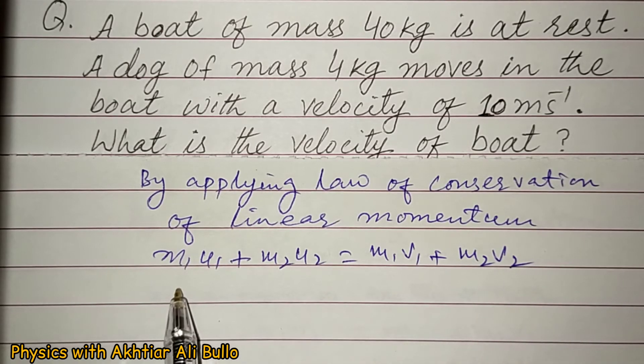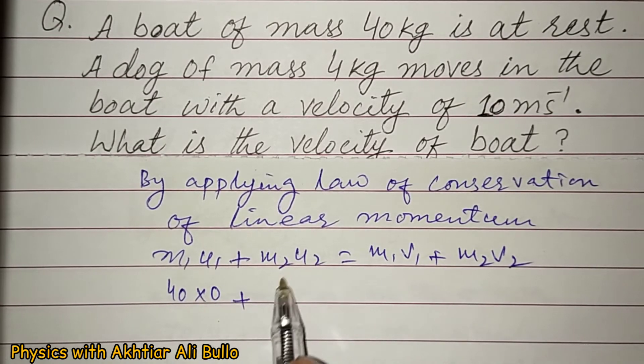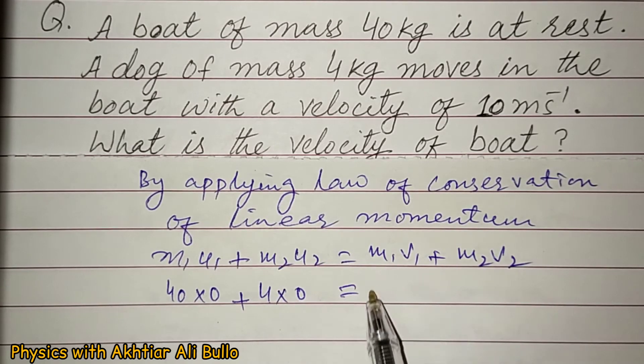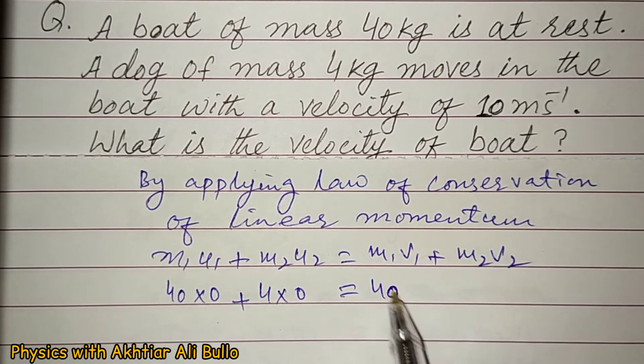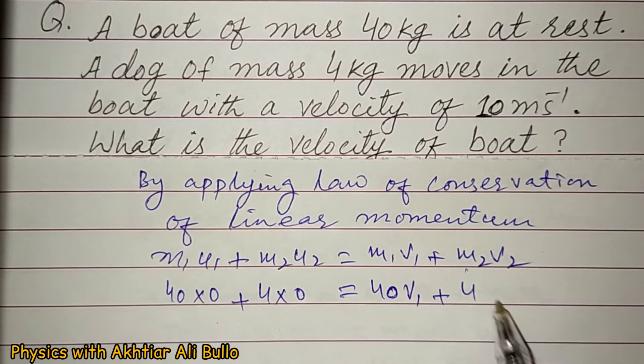As m1 is 40, so 40 × 0 plus m2 is 4, so 4 × 0 is equal to m1 is 40 - we have to find v1, which is the velocity of boat - so v1 plus m2 is 4.